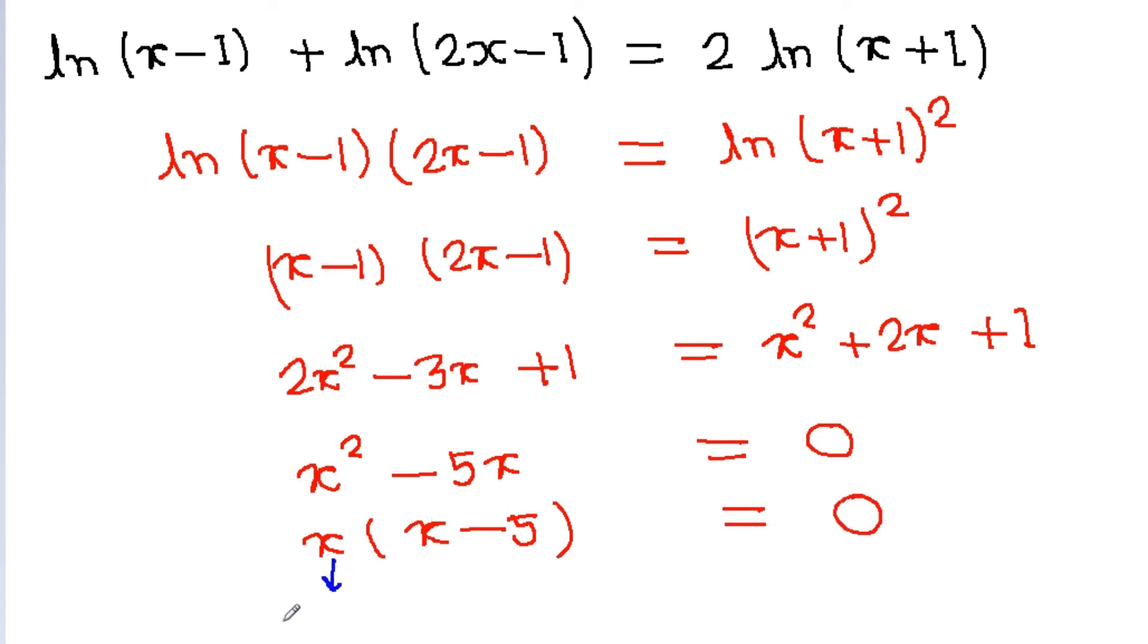This gives x is equal to 0, and x - 5 is equal to 0 gives x is equal to 5.